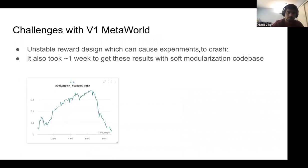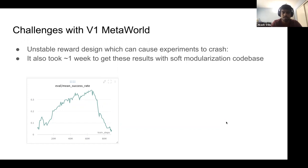Challenges with Meta-World v1 included unstable reward design — rewards could reach scales of many thousands, causing experiments to crash after initially increasing performance. The network was dealing with huge losses and high-magnitude numbers, leading to bad gradient steps.